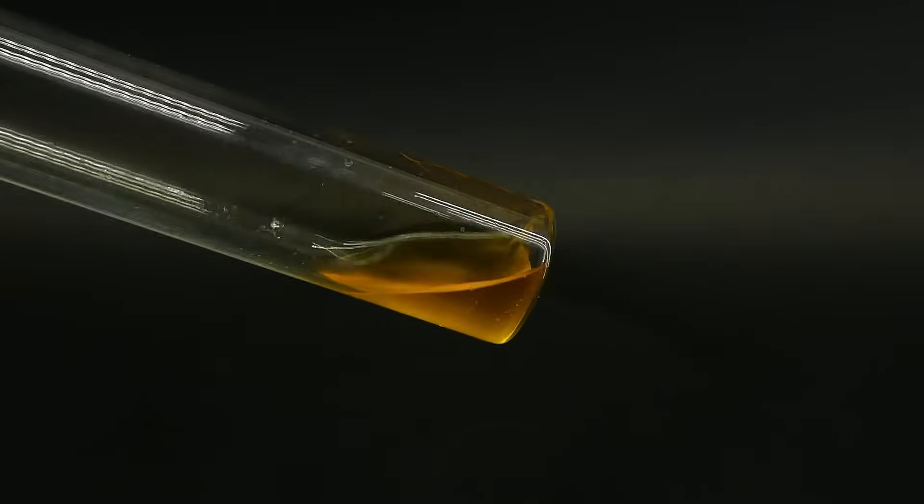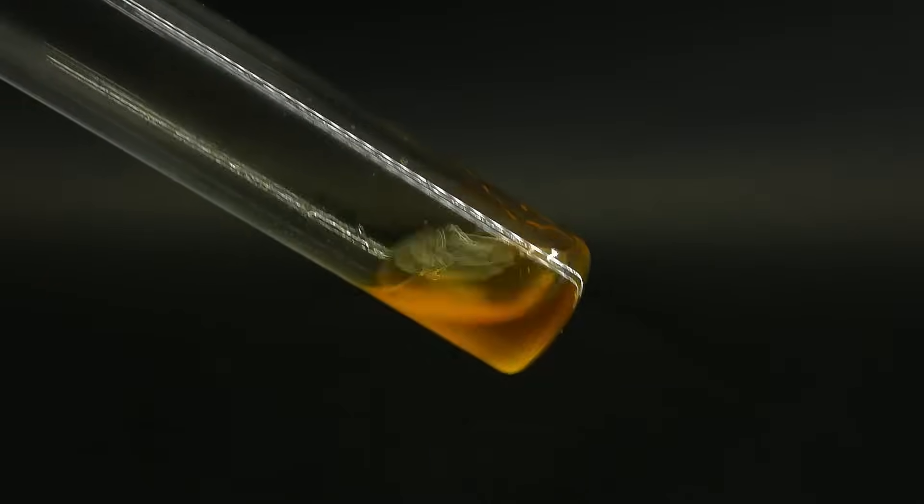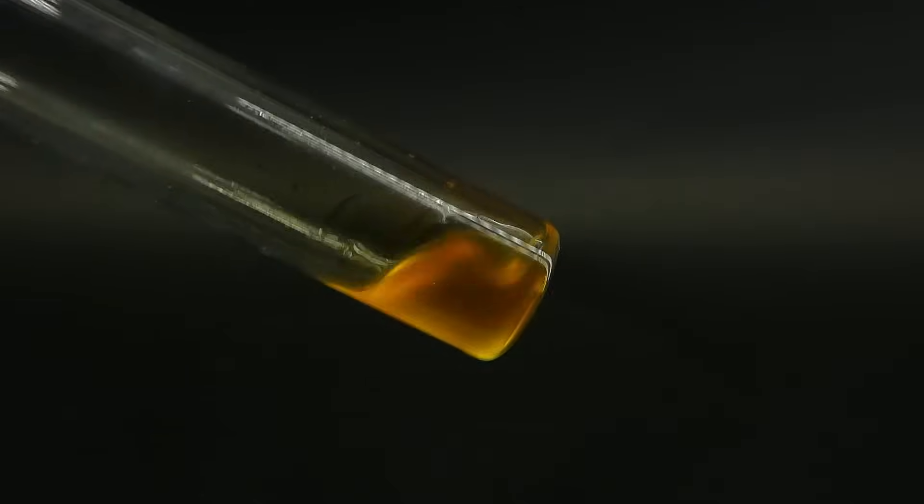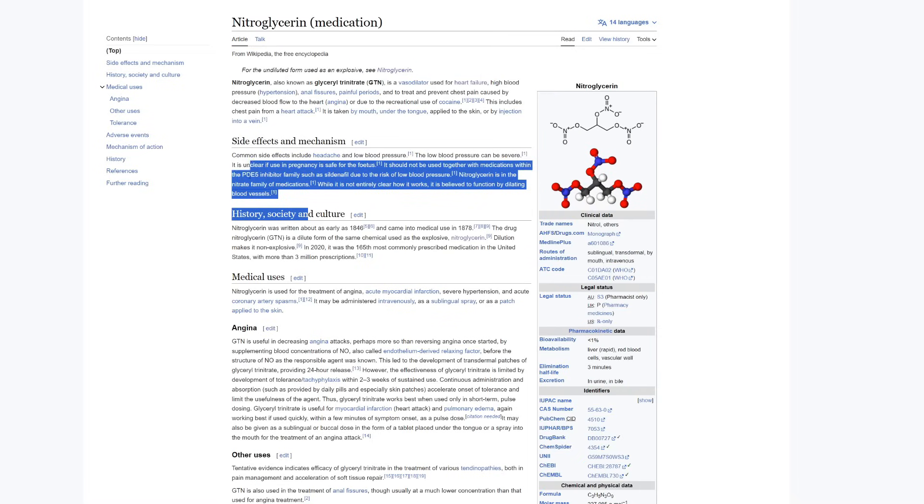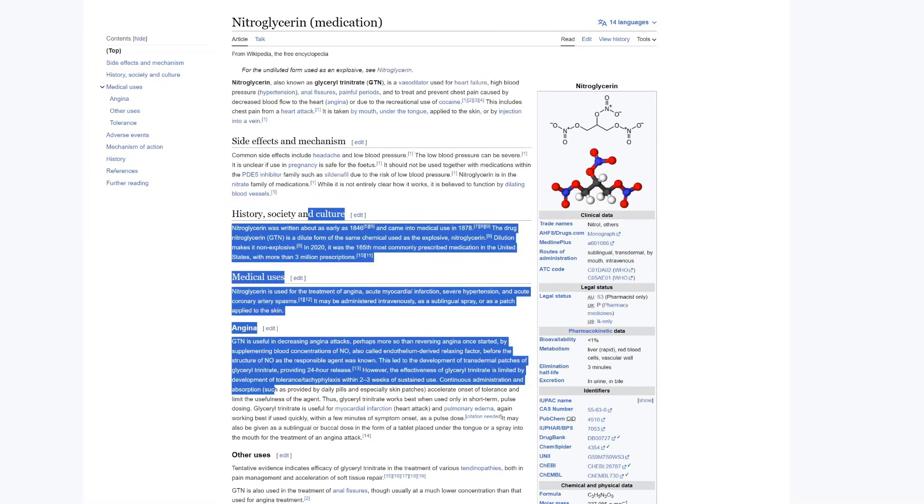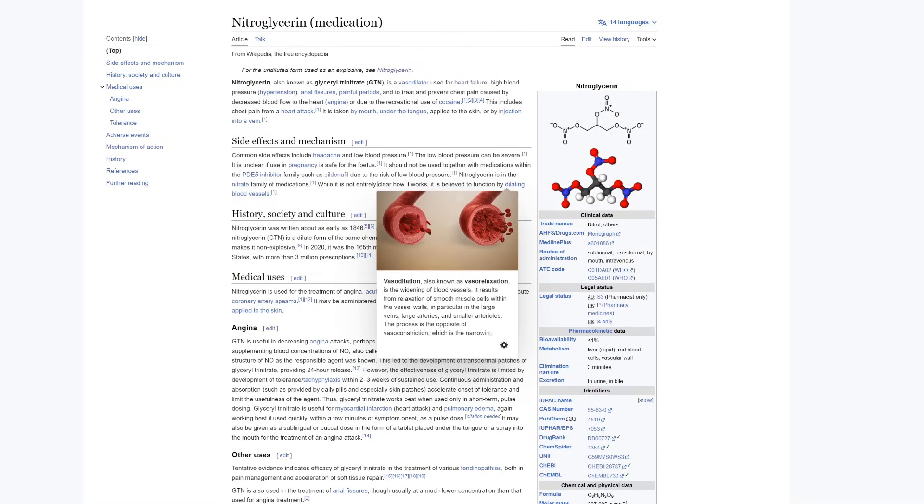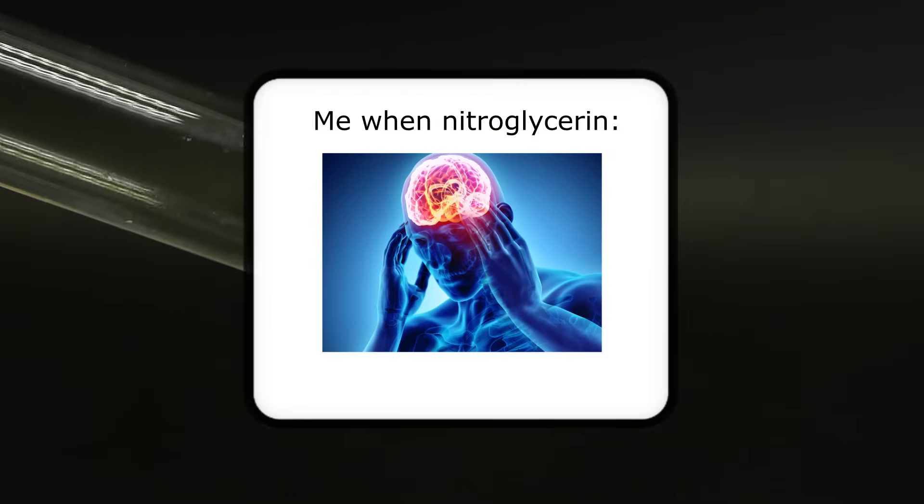Also, an interesting property of nitroglycerin is that upon entering the bloodstream, it can make your veins larger, by relaxing the muscles on their walls which can be life-saving, and to this day is used as a treatment for various heart diseases. But as a side effect, you can get an extreme headache that lasts for days, because the veins in your brain also enlarge. And I actually experienced that when a small droplet of the nitroglycerin got onto my skin.